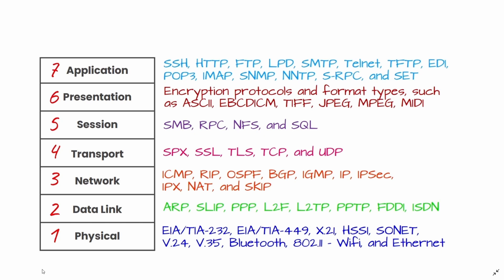The third layer of the OSI model is the network layer. The network layer is responsible for receiving frames from the data link layer and delivering them to their intended destinations based on the addresses contained inside the frame. The network layer finds the destination by using logical addresses such as IP addresses. At this layer, routers are crucial components used to route information between networks.